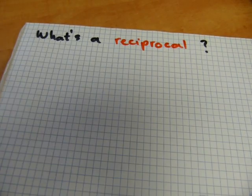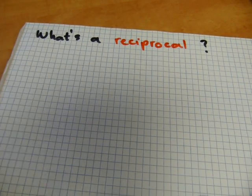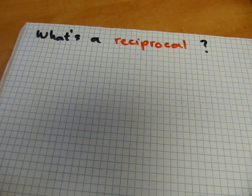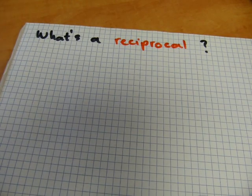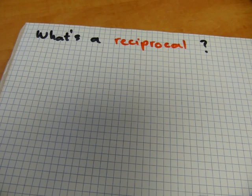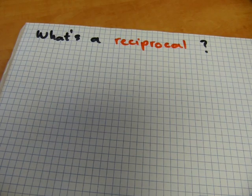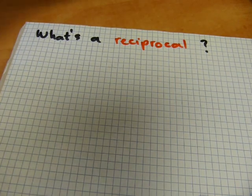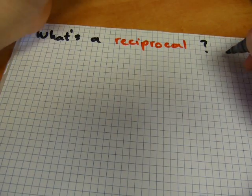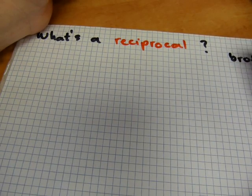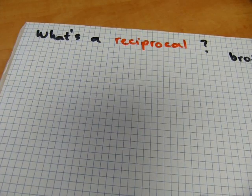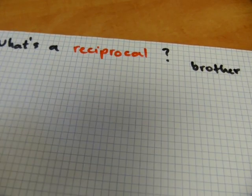The word reciprocal is a relationship word in math, just as left or right are relationship words in reference to direction, or for example the word brother is a relationship word, meaning having the same father.